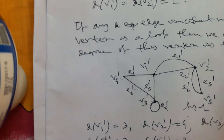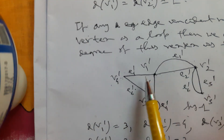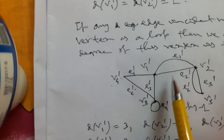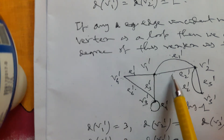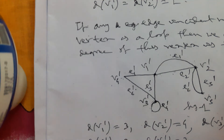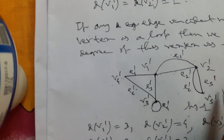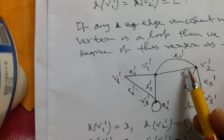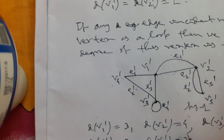Now we find the degree of vertices. D of V_1 is 3 — that means two parallel edges giving degree 2, and one non-parallel edge giving degree 3. D of V_2 is 4 — one to two non-parallel edges and two parallel edges, so 4.